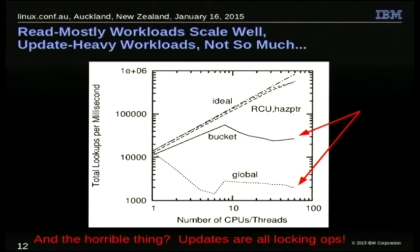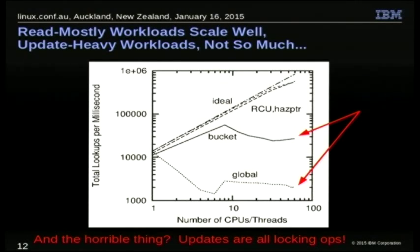On recent machines you might see something like this. The top line is the ideal — just take without locks and extrapolate. RCU and hazard pointers are close to that. When we use per-bucket locks on a read-only workload — we're only acquiring the locks to protect reads, everything's random and spread out — it should be perfect. But it goes up to eight CPUs and then drops. This is a log scale, and it drops a long ways. This is really bad.